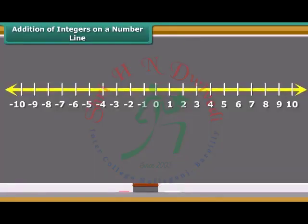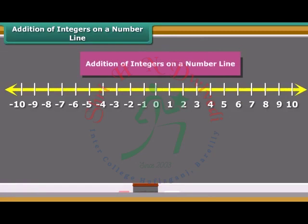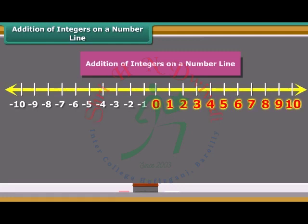Students, now we learn addition of two positive integers on a number line. If we add 6 and 4 on the number line, first move six steps to the right from 0 reaching 6, and then we move four more steps to the right of 6 and reach 10. Thus we get 6 plus 4 is equal to 10.